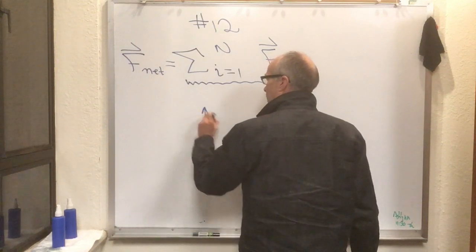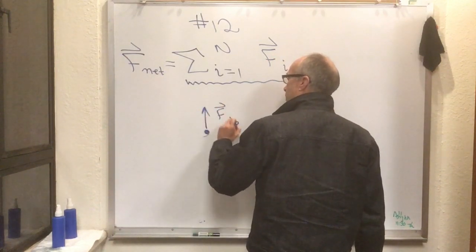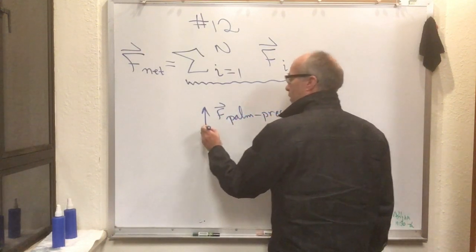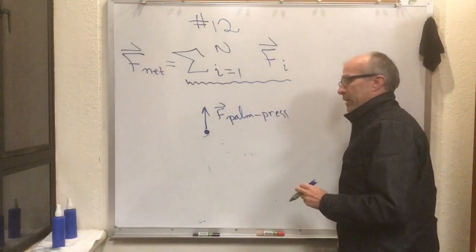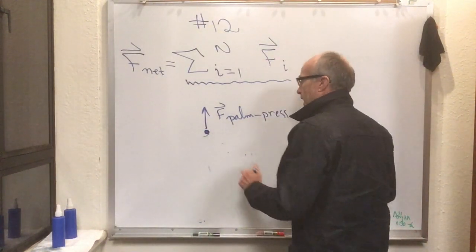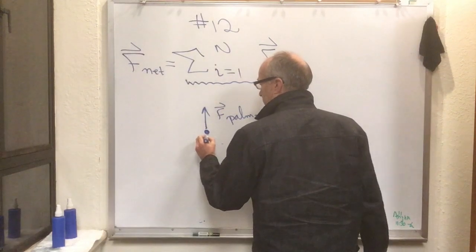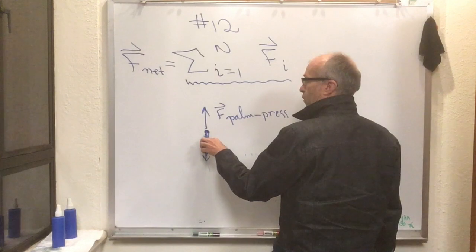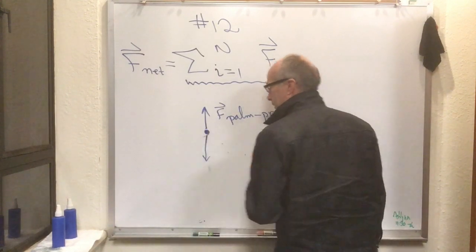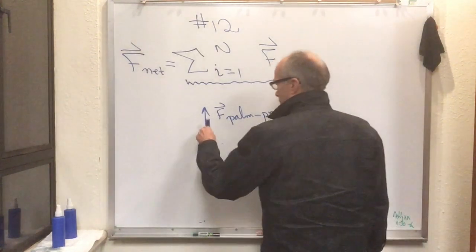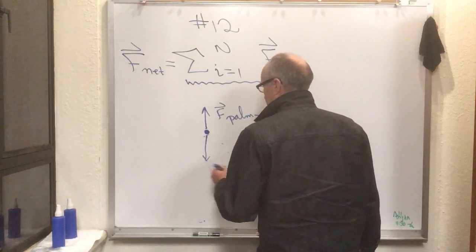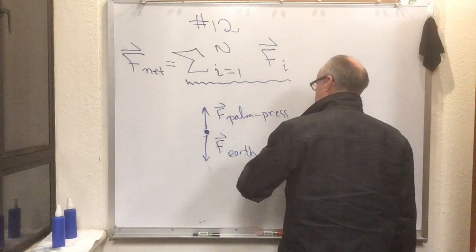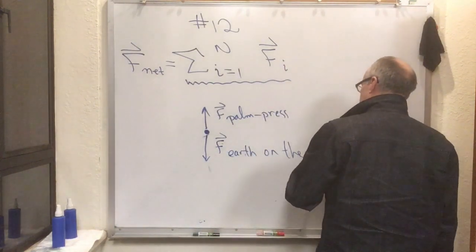with its tail on the particle pointing in the direction that I was pressing. And earth, which was pulling down on this thing, we put that force vector's tail on the object and we point it in the direction that it's pulling. So that's F of the earth on the bottle.